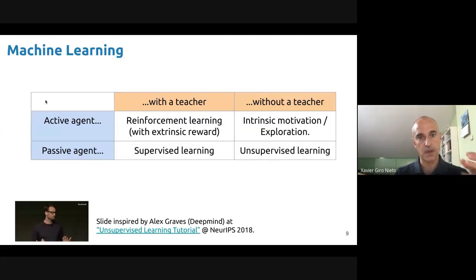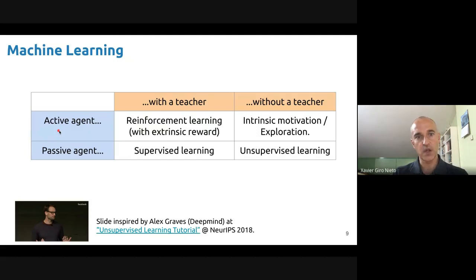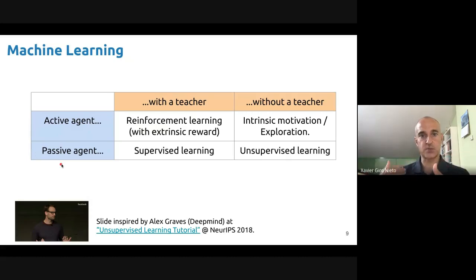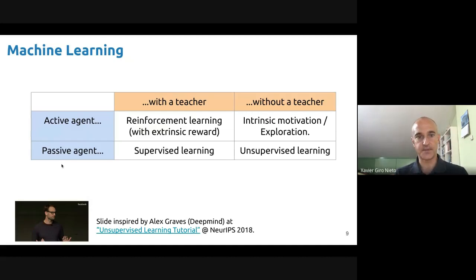There's a similar framework proposed by Alex Graves that introduces whether the agent — the artificial intelligent agent — is passive or active. An active agent can interact with the environment and proactively collect the data it learns from. A passive agent, which is our focus, simply looks at data provided by someone else. The agent learns but does not interact with any environment. So let's focus on supervised learning.